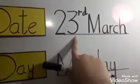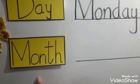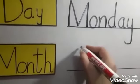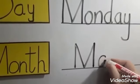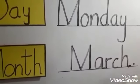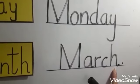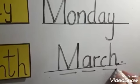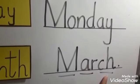So date is 23rd March, day is Monday, and now month. You know which month is going on? Let me tell you, this month is March. Which month is this? March. So let's read the spelling: March.